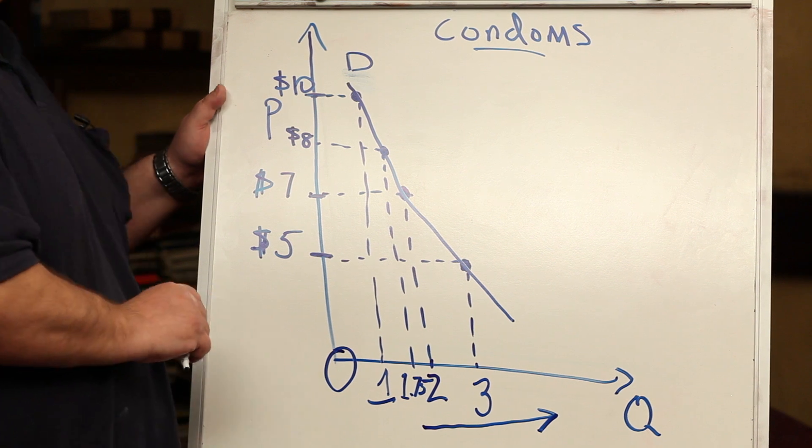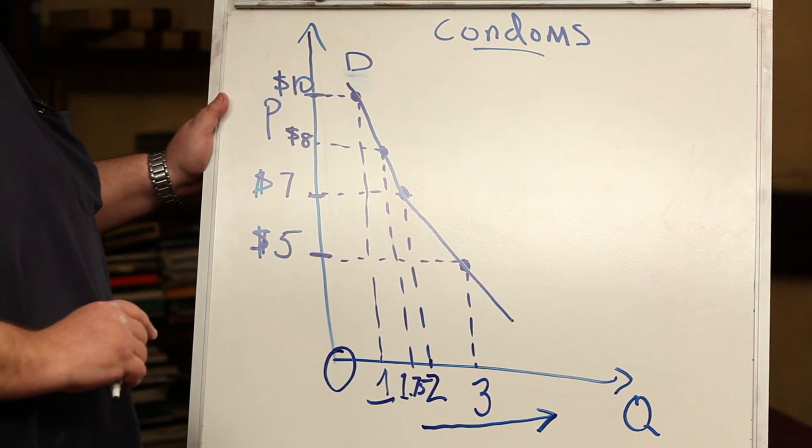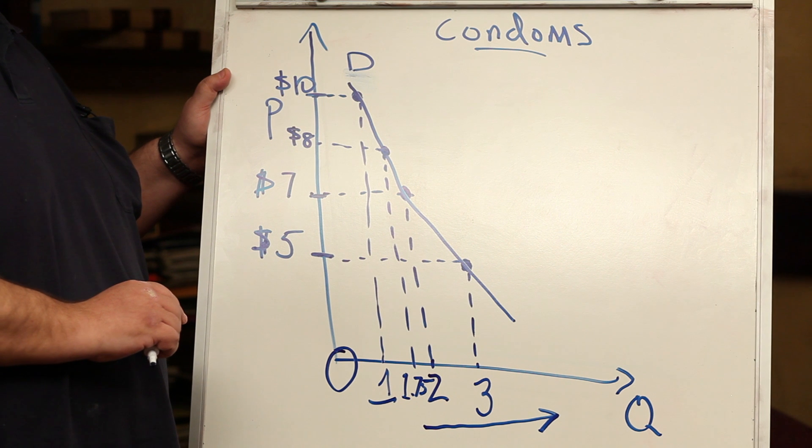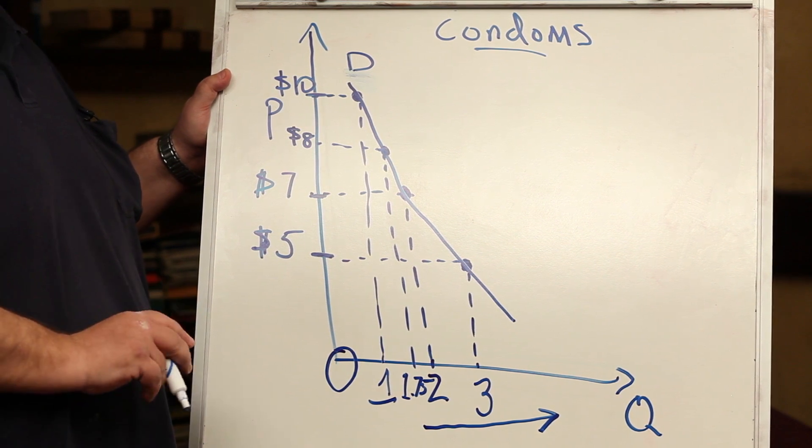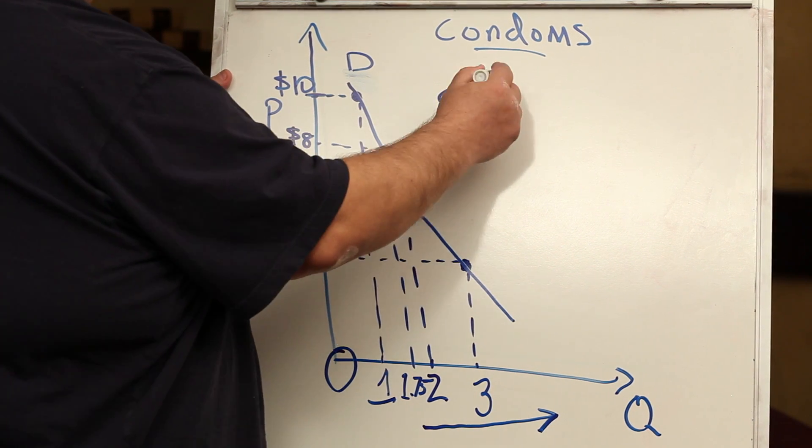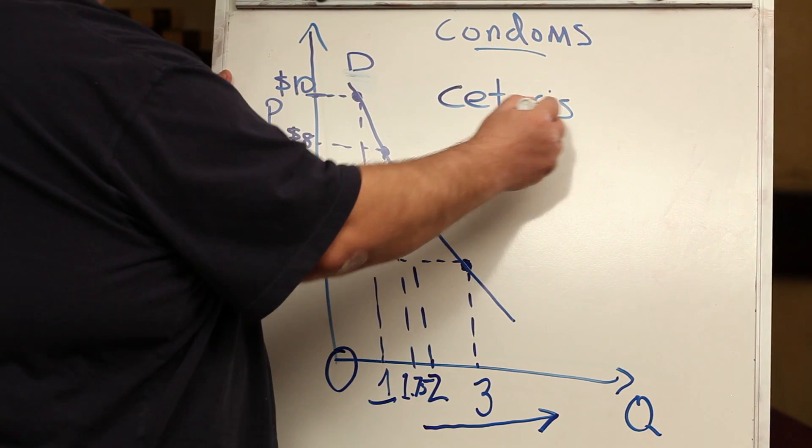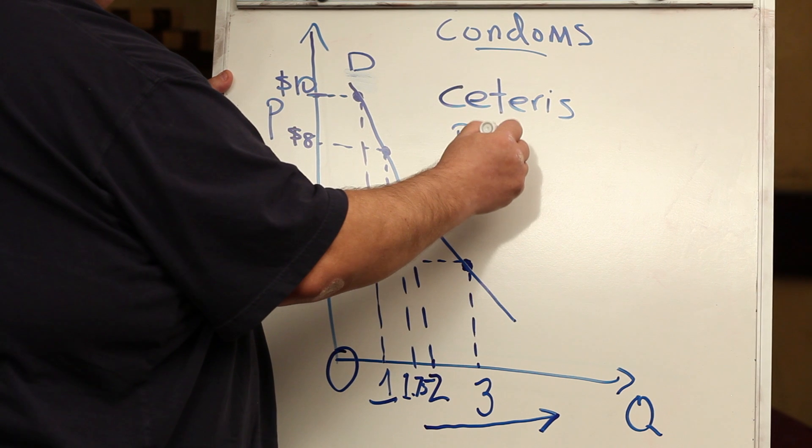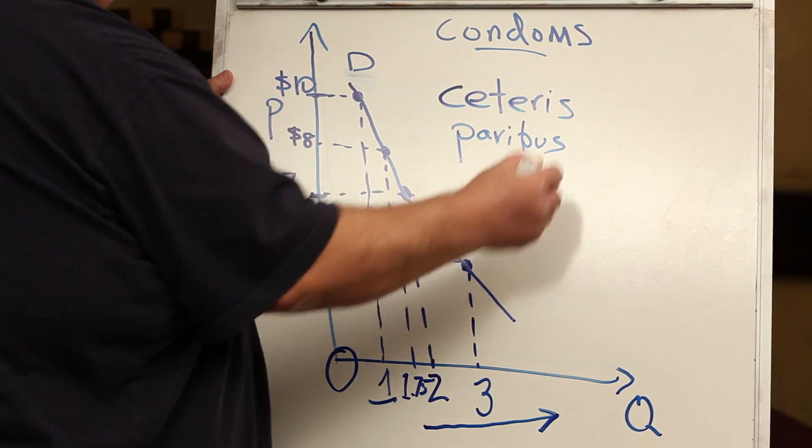The law of demand says that there's an inverse relationship between price and quantity demanded, ceteris paribus. Ceteris paribus, which means everything else held constant.